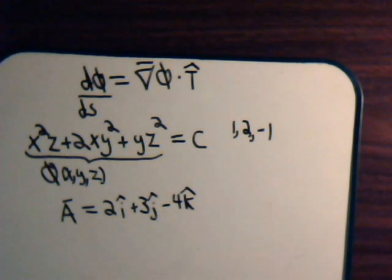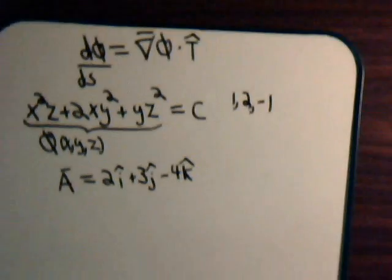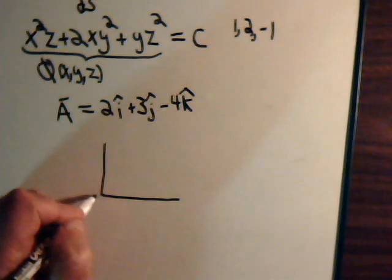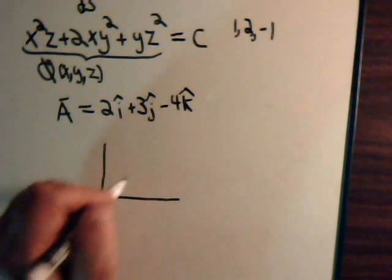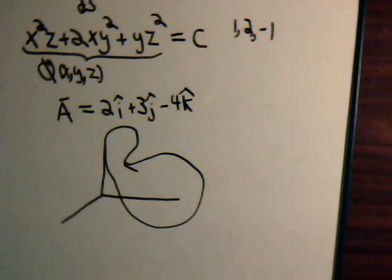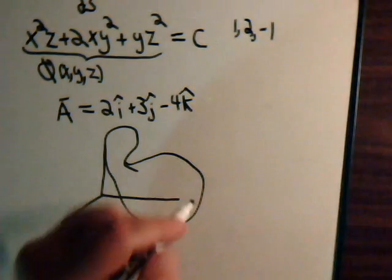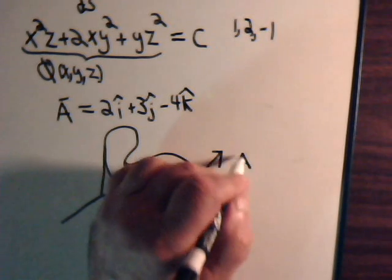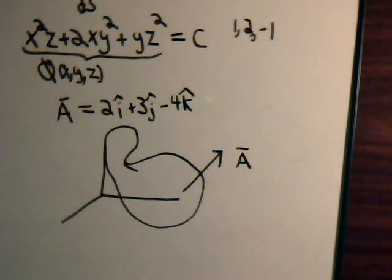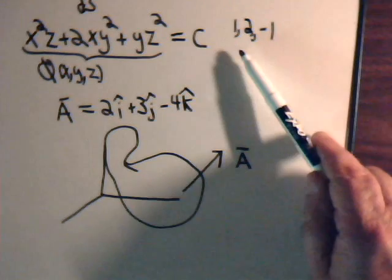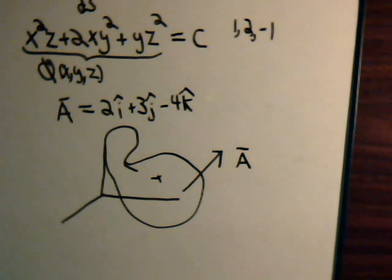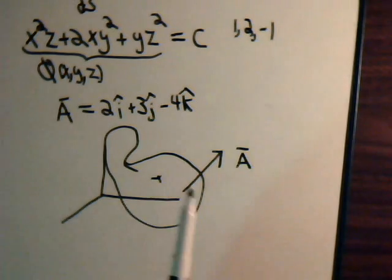So the way we can think of this problem visually is draw a three-dimensional axis. We have some surface here. And on the surface there's a vector A, or perhaps going right through it. And then we're at a point on the surface here. We want to know if we're standing at that point, what would be the rate of change of this scalar in the direction of this vector?